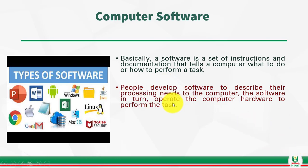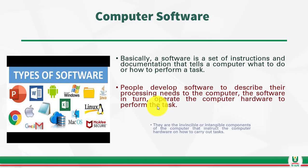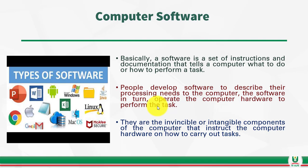The software will operate the computer hardware to perform the task. As I'm using my mouse, it's not the mouse that is performing the function. The mouse will just be there waiting for instruction from the software to perform specific tasks. So the software is basically the component that interfaces with the computer hardware to perform the specific tasks that you want your computer to perform. They are the intangible components of the computer that instruct the hardware on how to carry out the task.